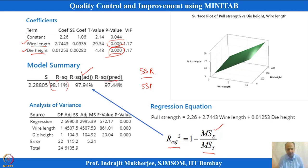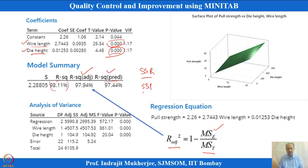The R-squared predicted value is also important: one observation is dropped at a time, a model is re-fit, and the prediction for the removed observation is evaluated. This leave-one-out approach is how R-squared predicted is computed in MINITAB. Both R-squared adjusted and R-squared predicted should be examined.